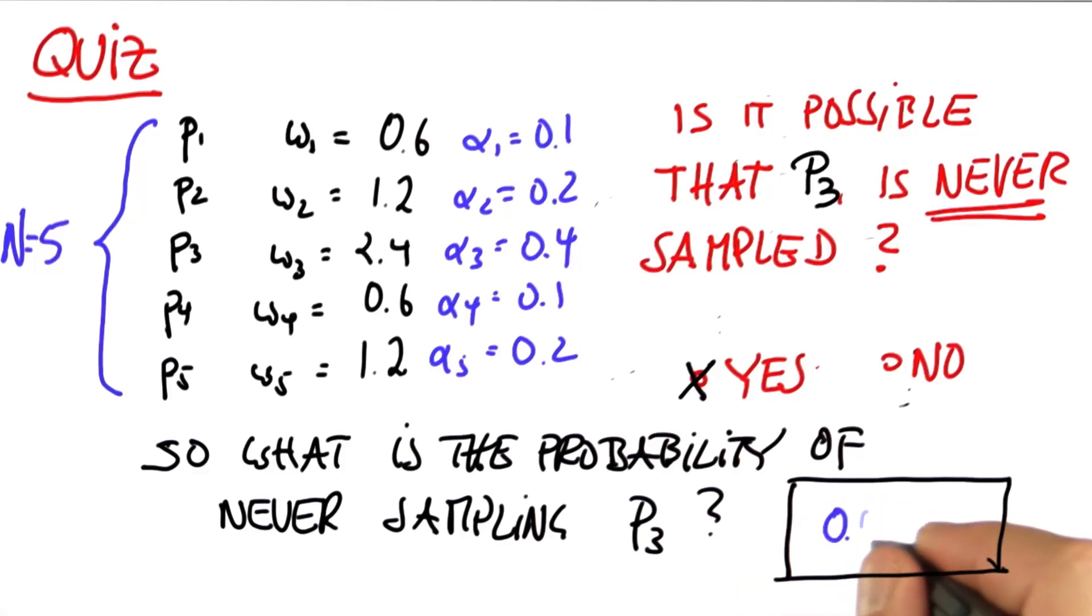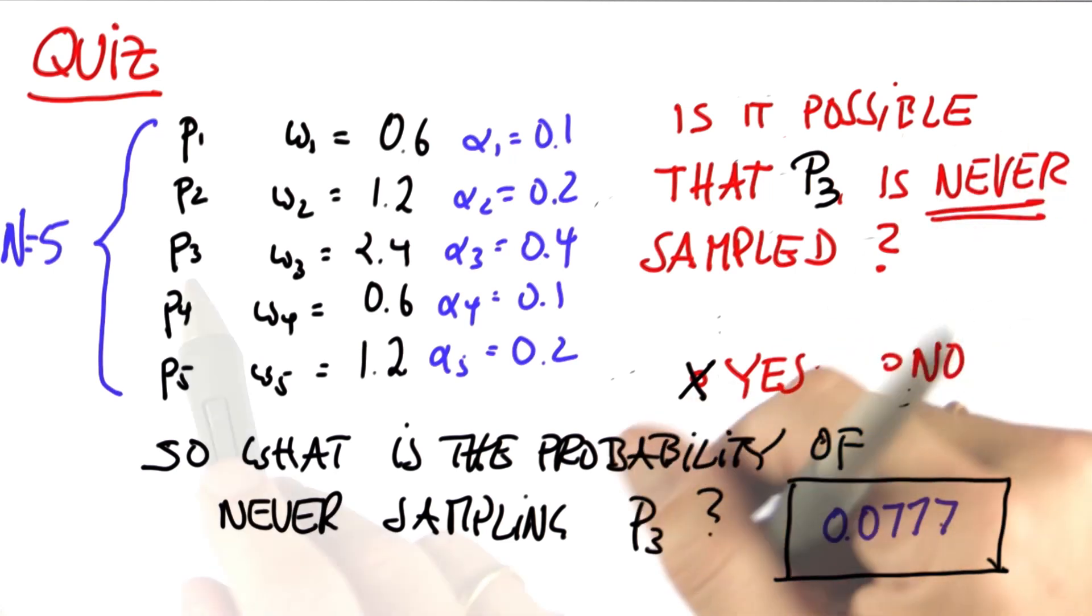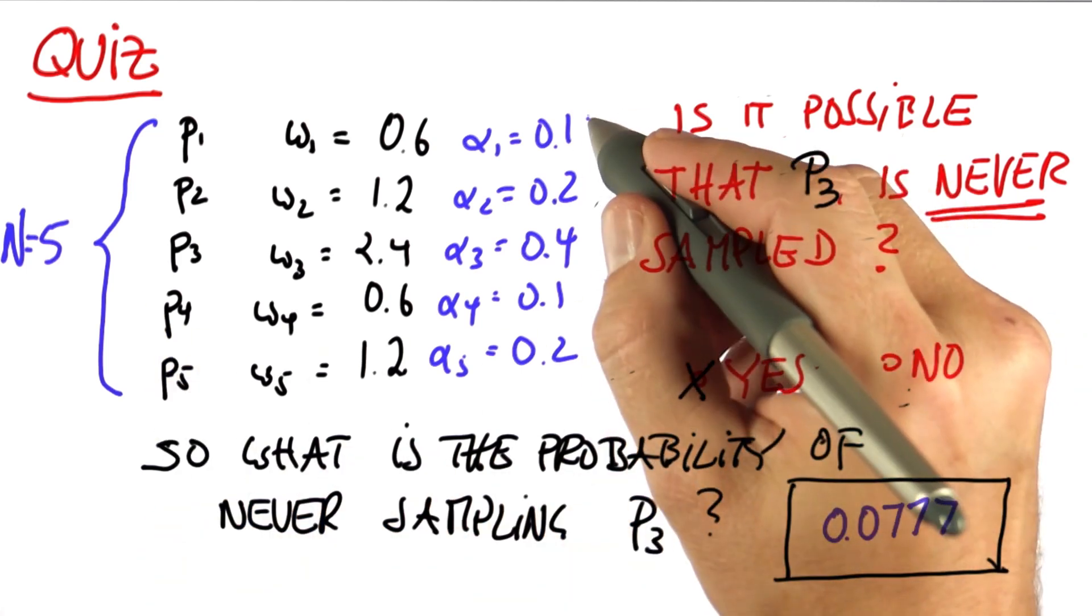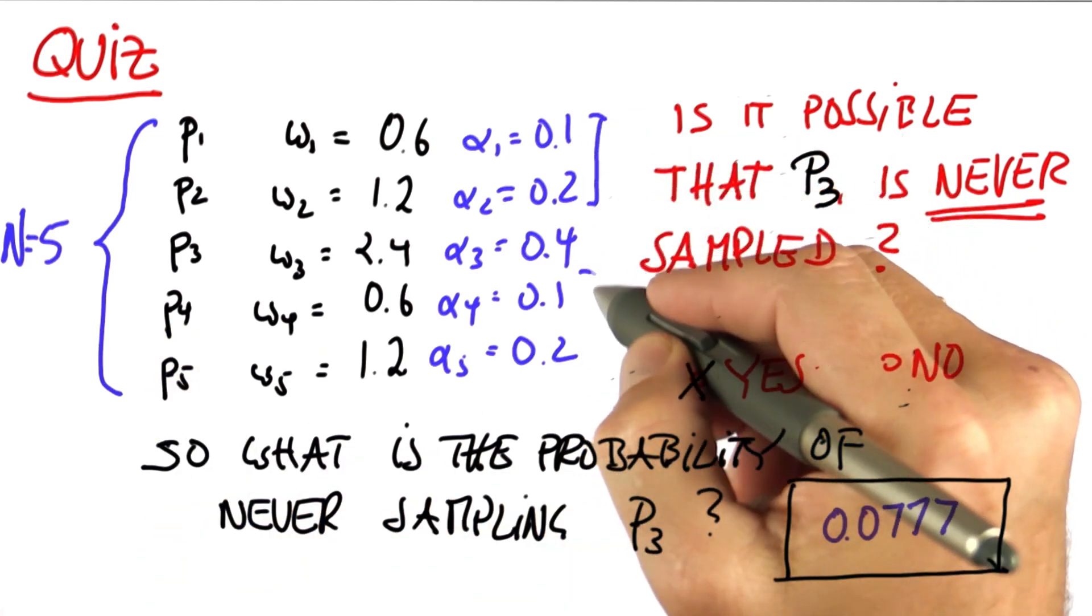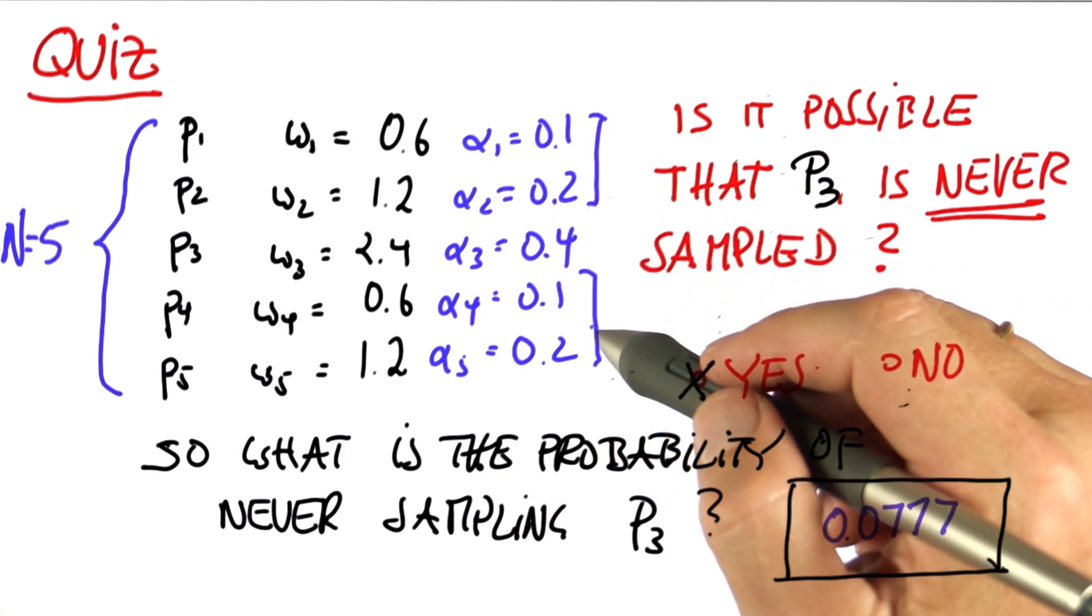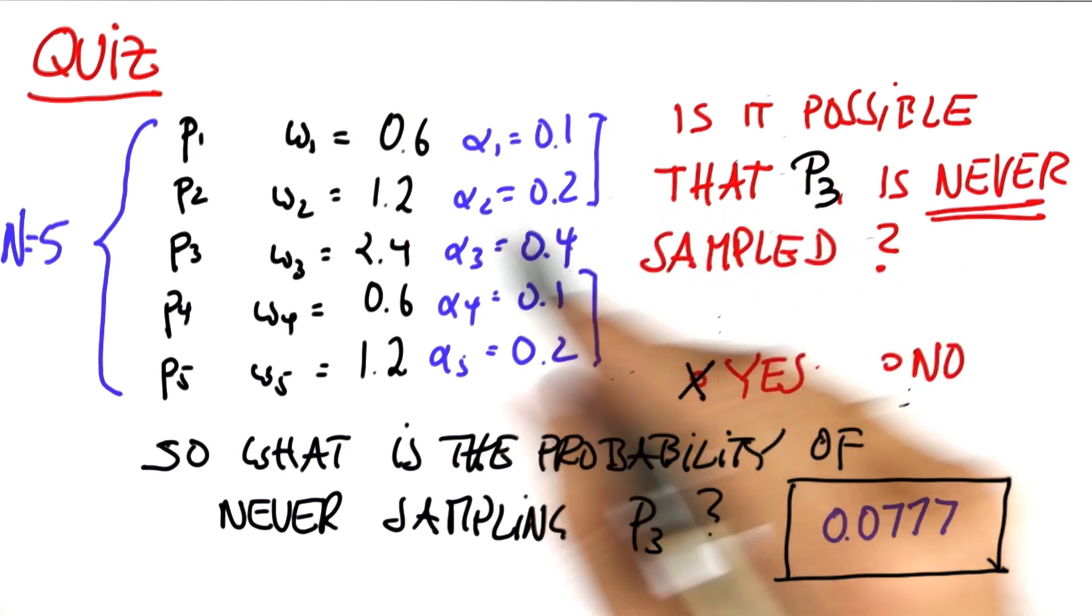And the answer is 0.0777 approximately. And the way to obtain this is, for this particle to never be drawn in the resampling phase, we always have to draw one of the following four particles. Those together have a probability of 0.6 to be drawn, which contrasts to the 0.4 for P3.